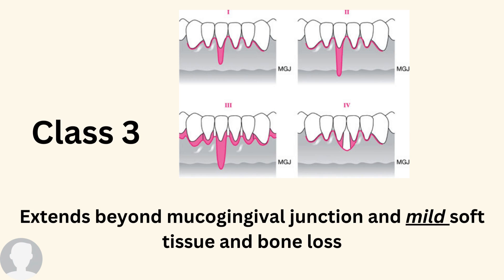Class 3 also extends beyond the mucogingival junction, but there is mild soft tissue and bone loss. As you can see in the picture, multiple teeth are affected with receding gums, and one tooth extends beyond the mucogingival junction.